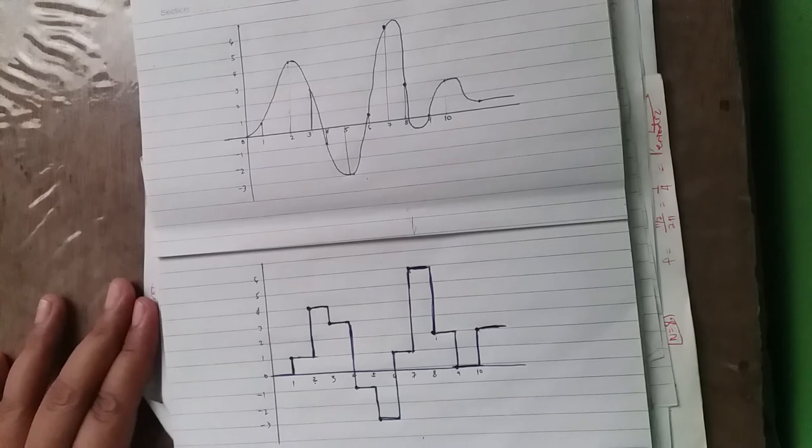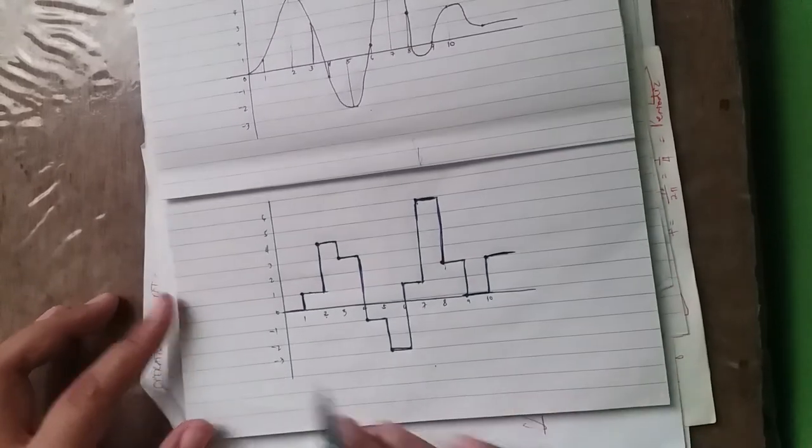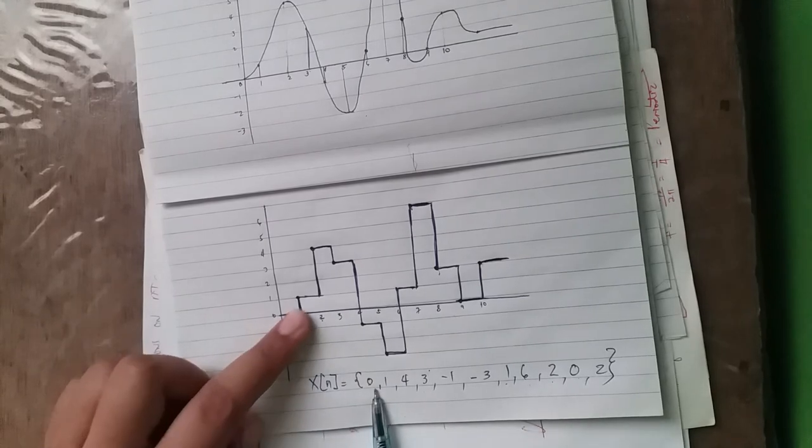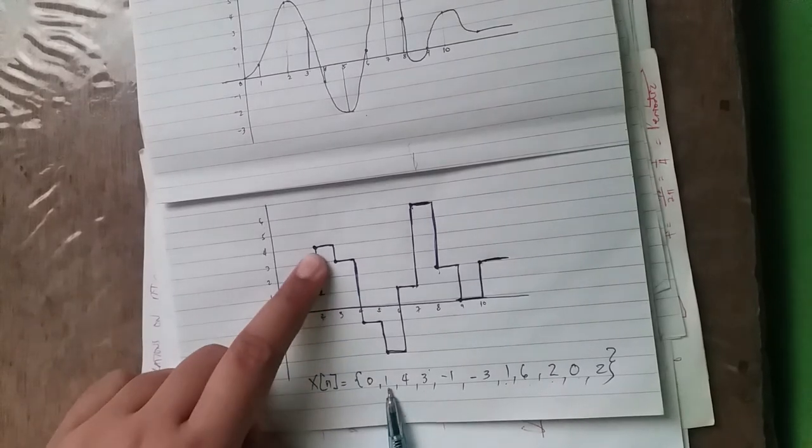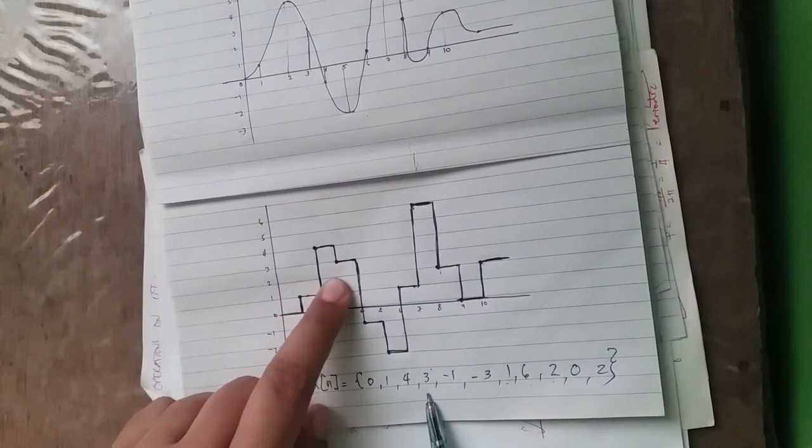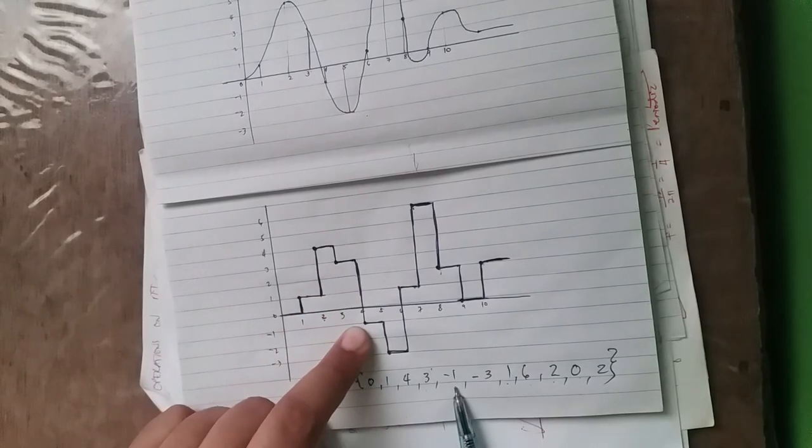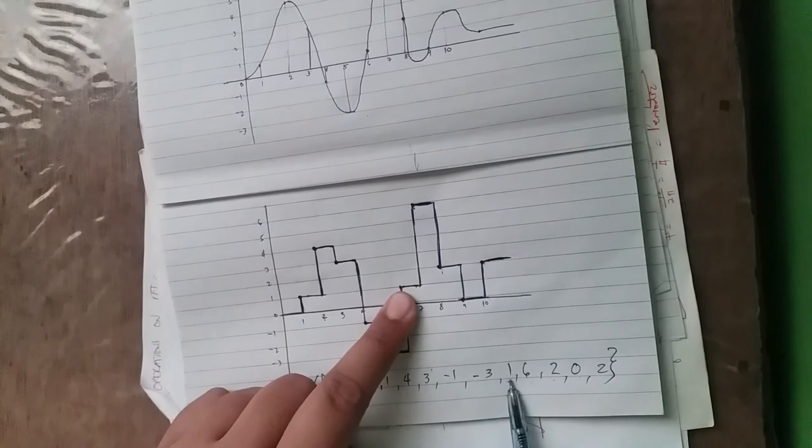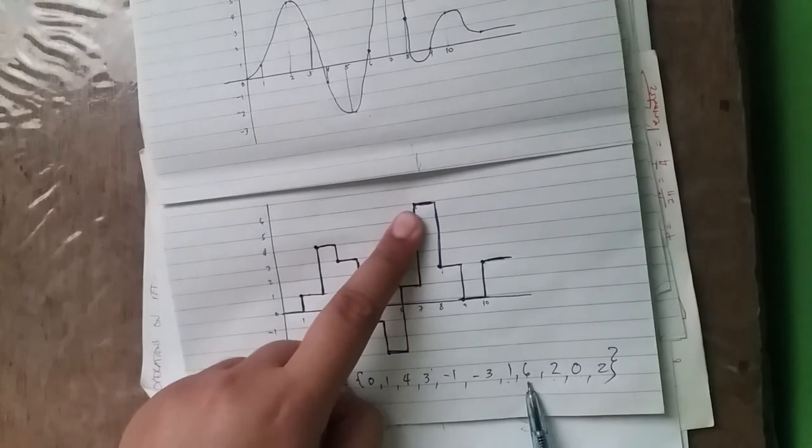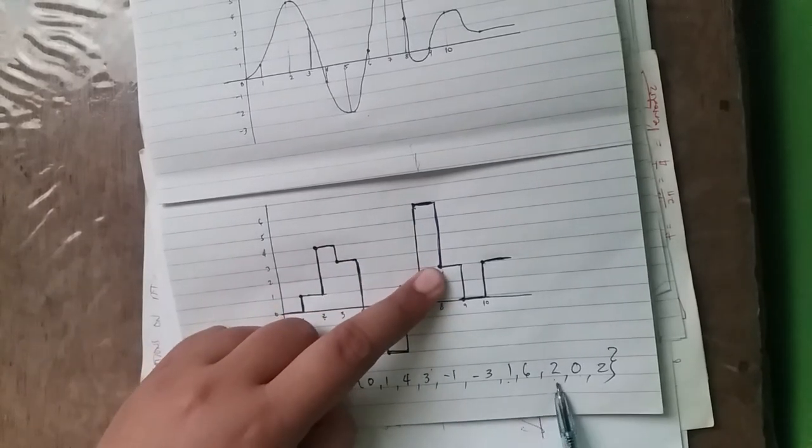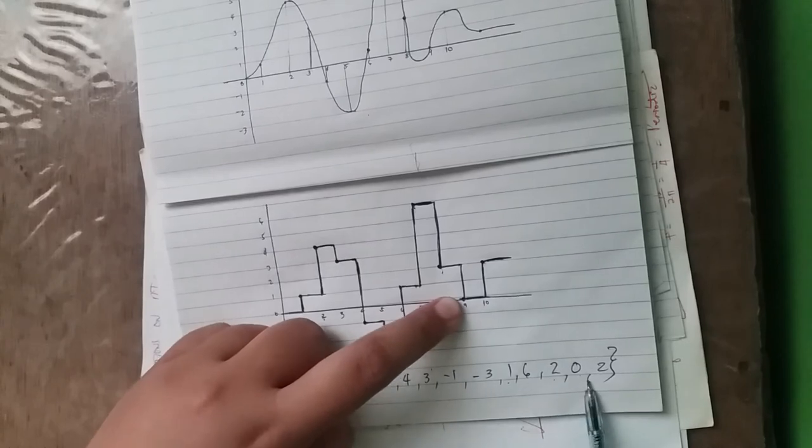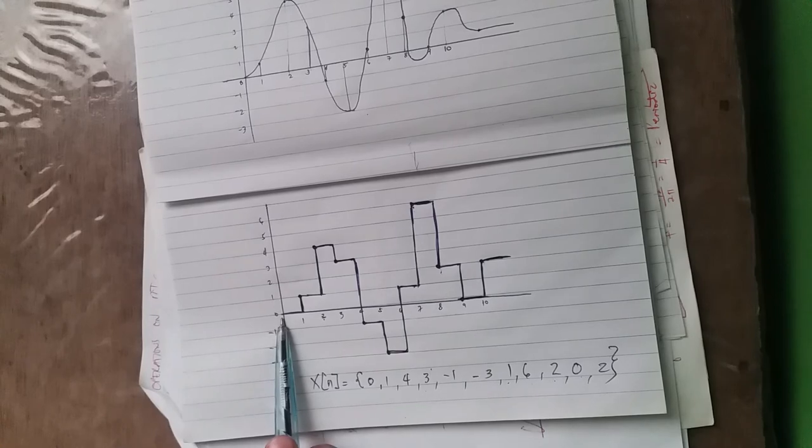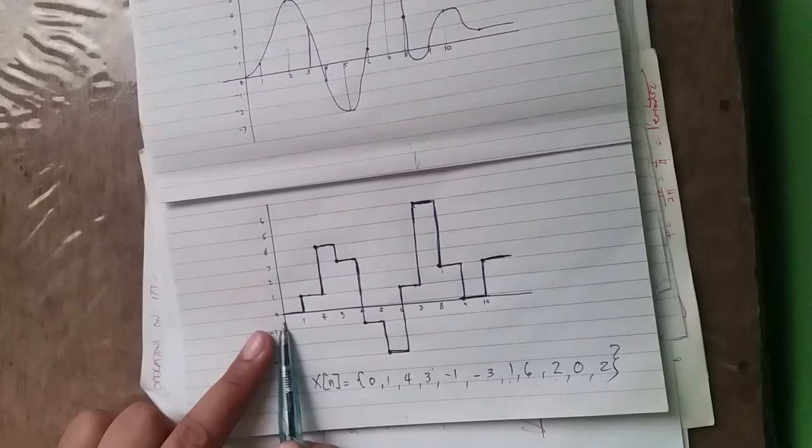If we are going to write it x of n: 0, 1, 4, 3, negative 1, negative 3, positive 1, 6, 2, 0, and then 2. So our n is equal to 0 is 0 at the beginning.